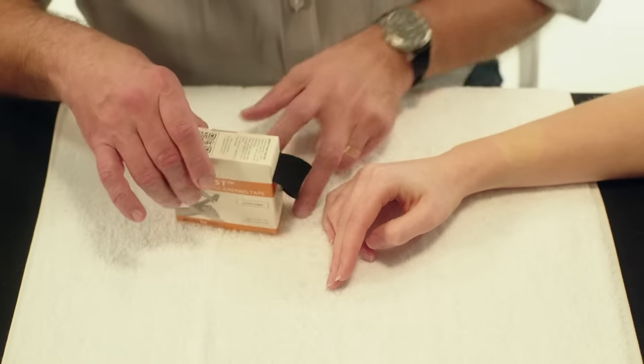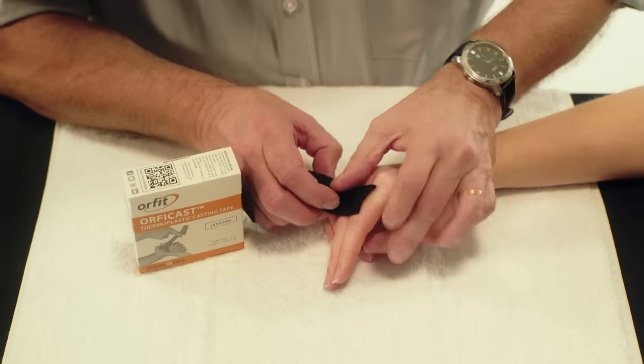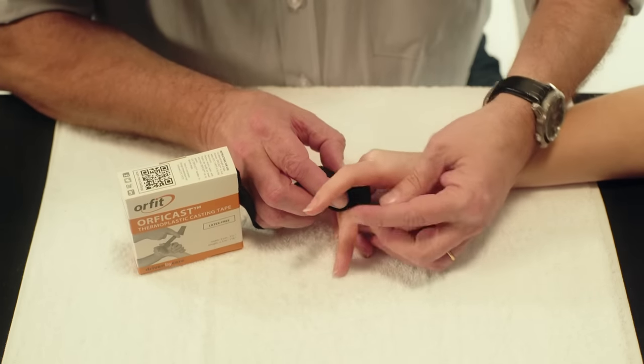Use two strips of 3 cm Orphicast, each measuring two times the circumference of one of the fingers.